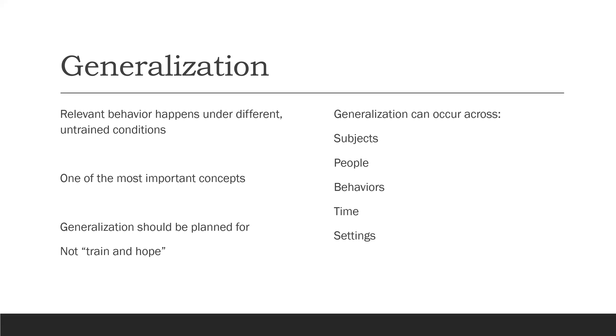The old idea of 'train and hope' — where we would train up a skill and just hope that it would generalize — is outdated. We should now plan for it, program for it, and teach generalization. Generalization can occur across subjects, people, behaviors, time, and settings.